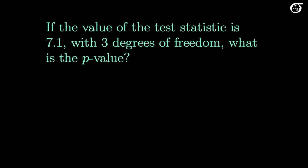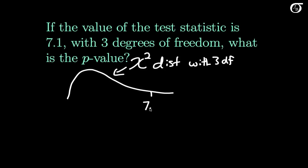In this simple example, if the value of the test statistic is 7.1 with 3 degrees of freedom, what is the p-value? I'm going to draw out a chi-square distribution with 3 degrees of freedom. 7.1 is out here somewhere, and our p-value is simply the area to the right. Our p-value is the area to the right of that value.